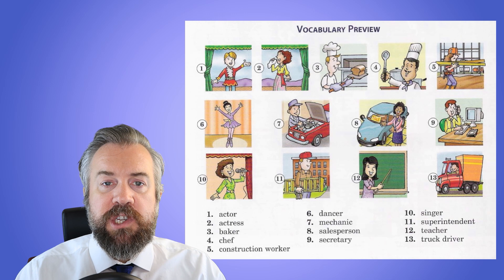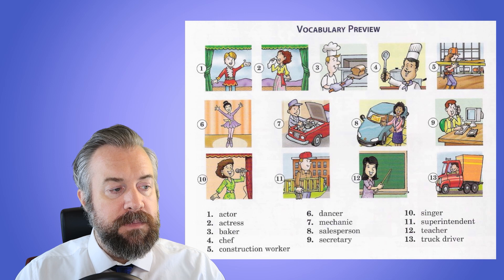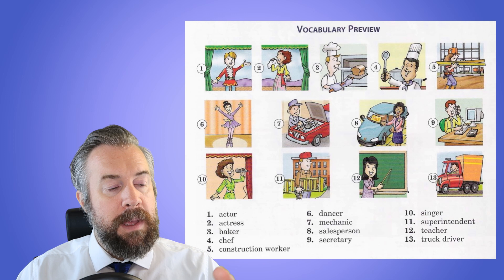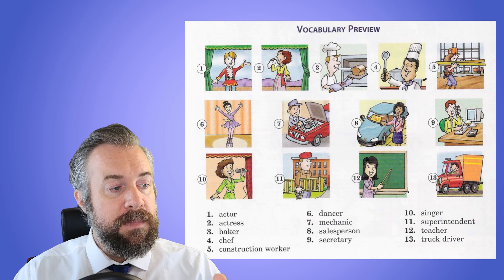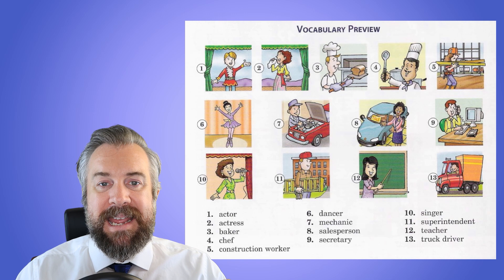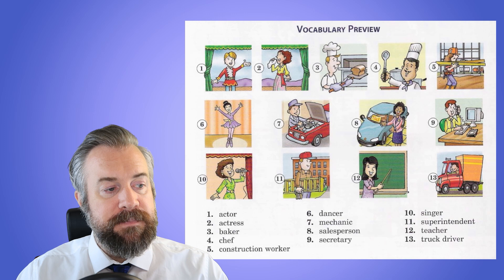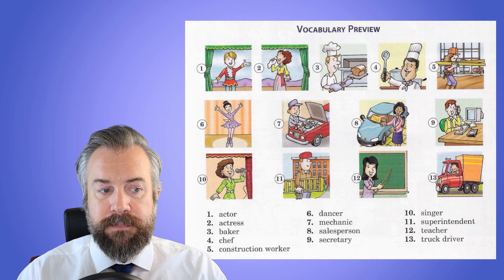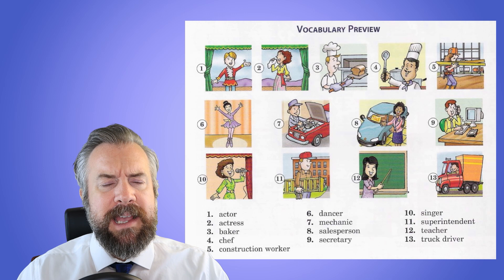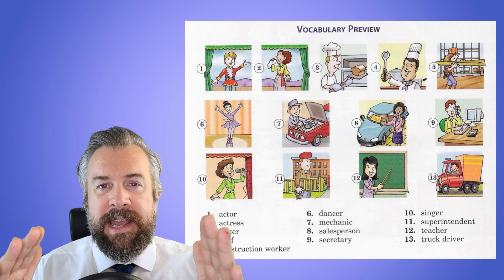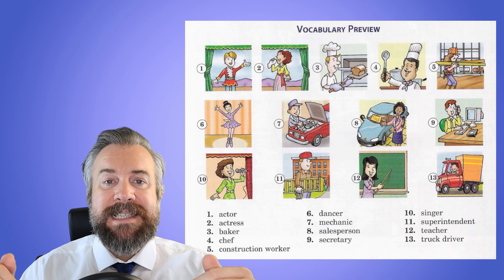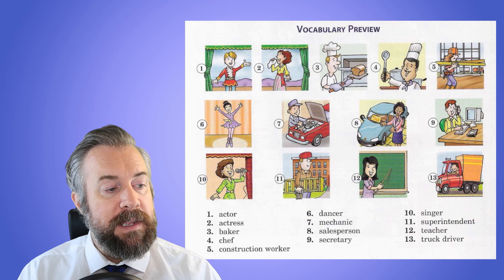Number five: construction worker — she is a construction worker. Number six: she is a dancer — maybe a ballet dancer, but there are different types of dancing. Number seven: mechanic — he fixes cars. Number eight: salesperson. We used to say salesman or saleswoman, but now we are gender neutral — it is salesperson, sometimes called sales representative or sales rep.